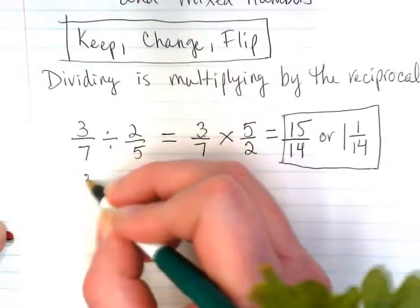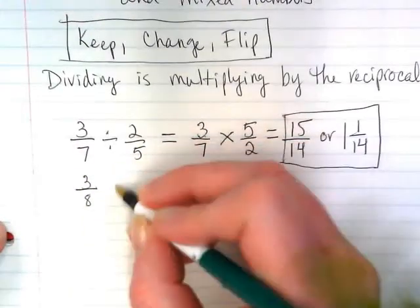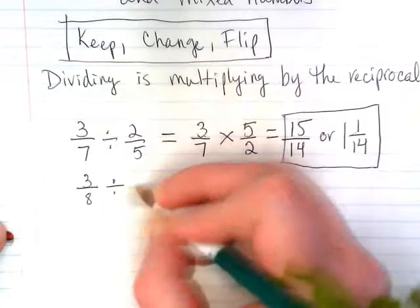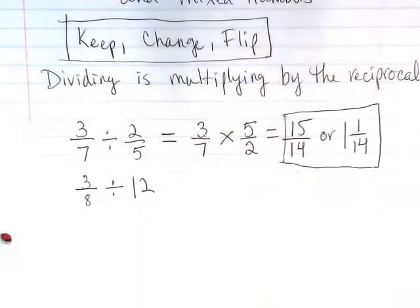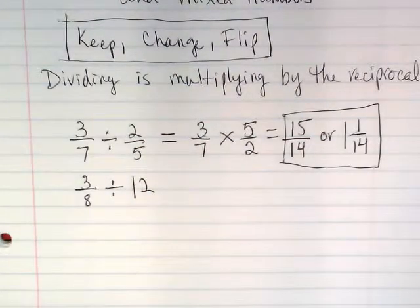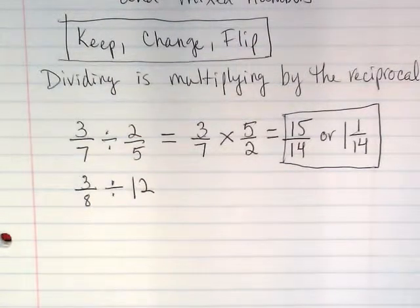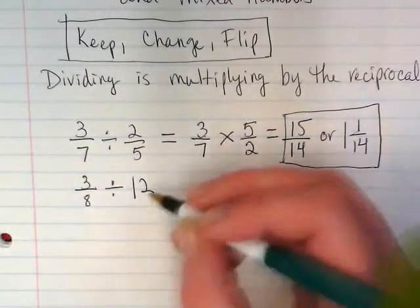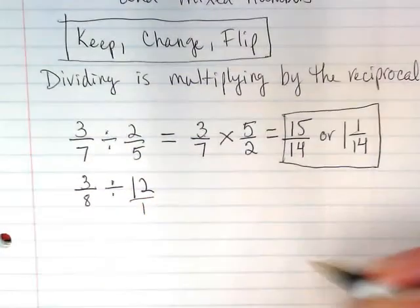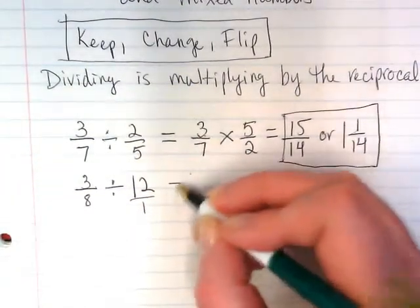I'm going to do this example because sometimes there's a little bit of confusion. If we're multiplying or we're dividing a fraction by a whole number, what do we do? We have to remember that there's an invisible one underneath this.